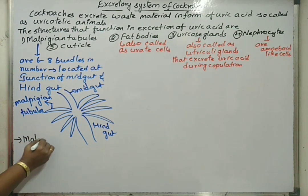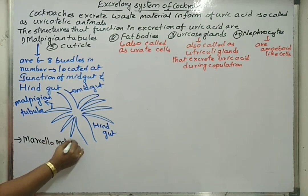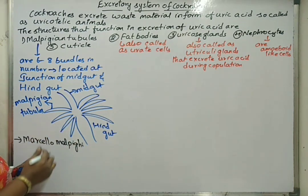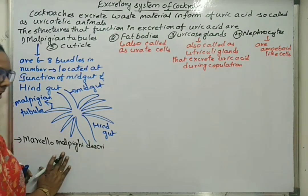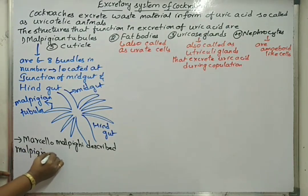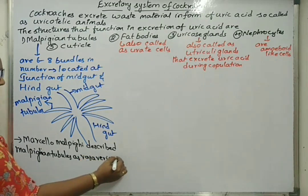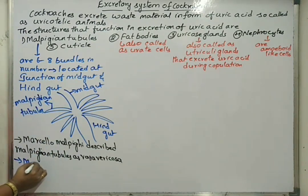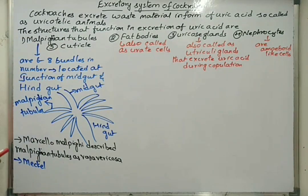Marcello Malpighi described these Malpighian tubules as 'vasa varicosa.' He did not give the name 'Malpighian tubules' himself. Another person called Meckel later gave the term Malpighian tubules.